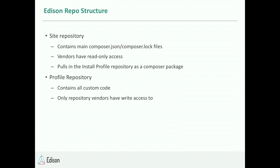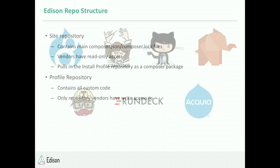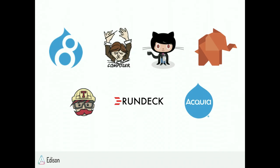We only give vendors access to the code they need to use and alter — their custom code. The main site's composer.json file pulls in our Edison Base, which is really just a PHP package, and it pulls in the installation profile, also a PHP package. To build the site you run a single composer create-project command, get the site repo, and your whole site gets built with the installation profile pulled in. Edison is essentially the umbrella around all the things we need to create and maintain these Drupal sites.